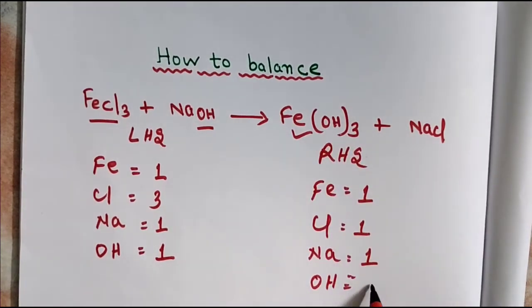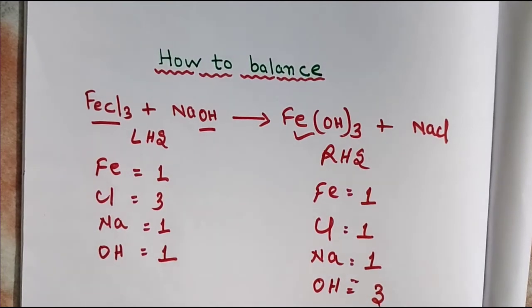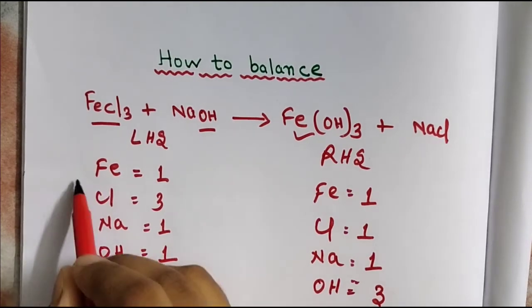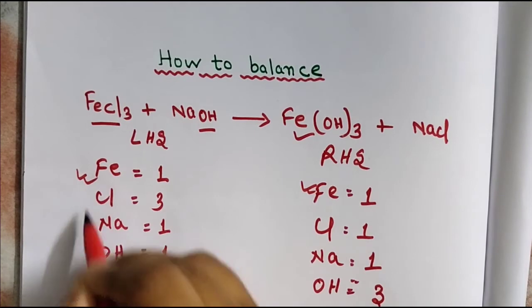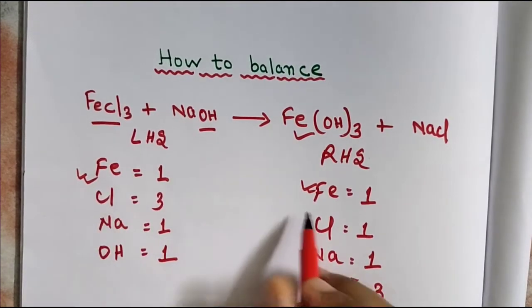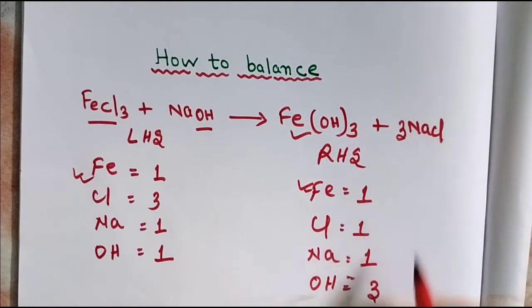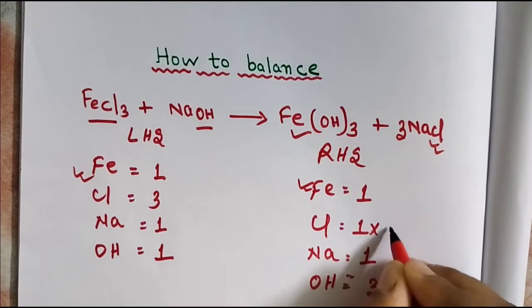Now balance this equation. You can see iron is balanced, but chlorine is not. So if I put 3 in front of NaCl, 1 times 3 gives me 3 chlorine atoms.